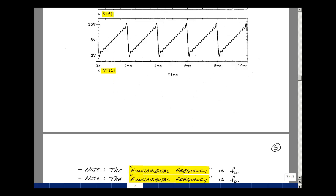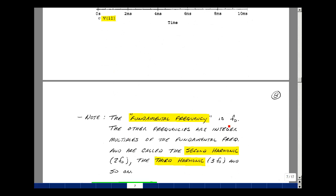Now just some final terminology. In this last example, F0 was equal to 500 hertz. We call that our fundamental frequency. The other frequencies are multiples of the fundamental frequency. Twice F0, 3 times F0 are called the second harmonic and the third harmonic, and so on. And this is finding a Fourier series for a sawtooth waveform. So we'll see you next time.